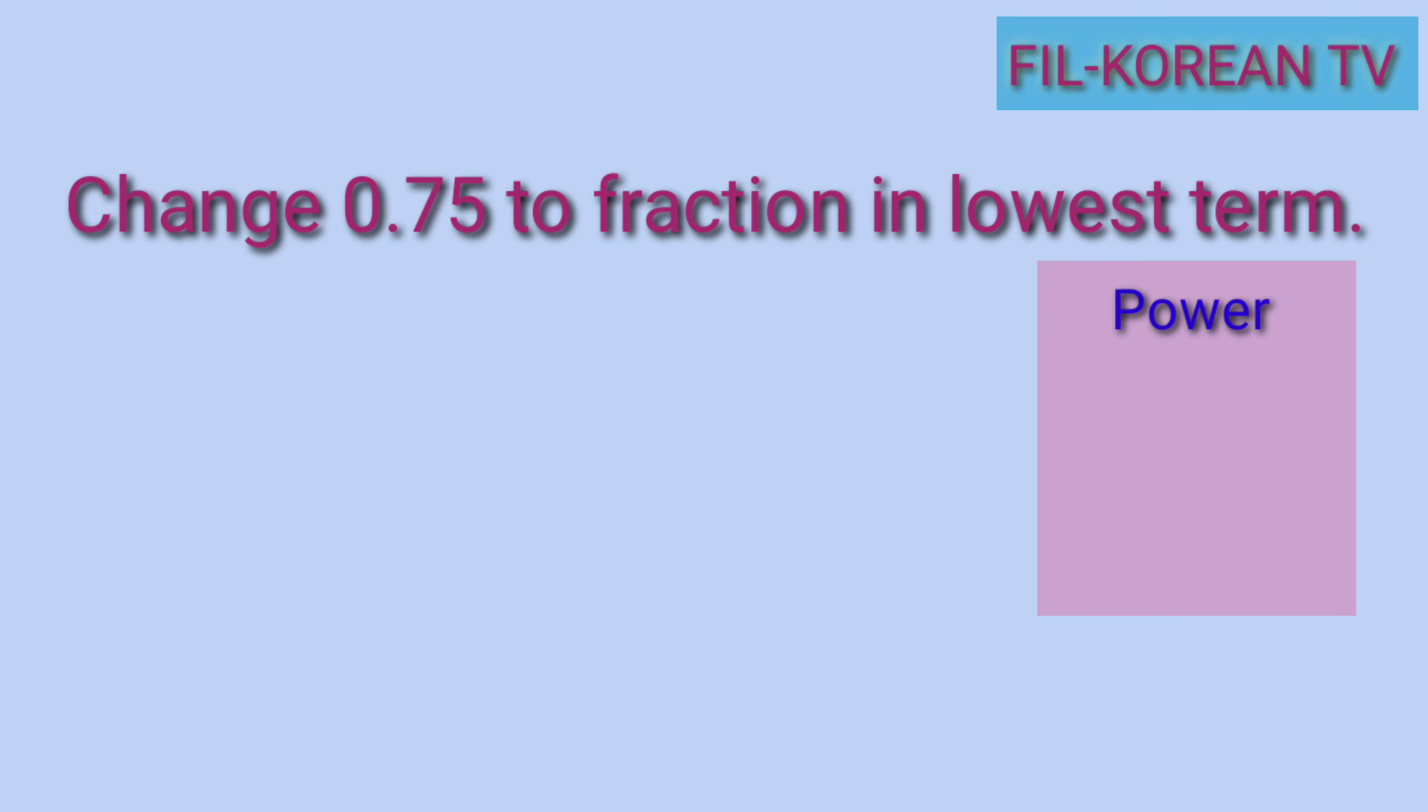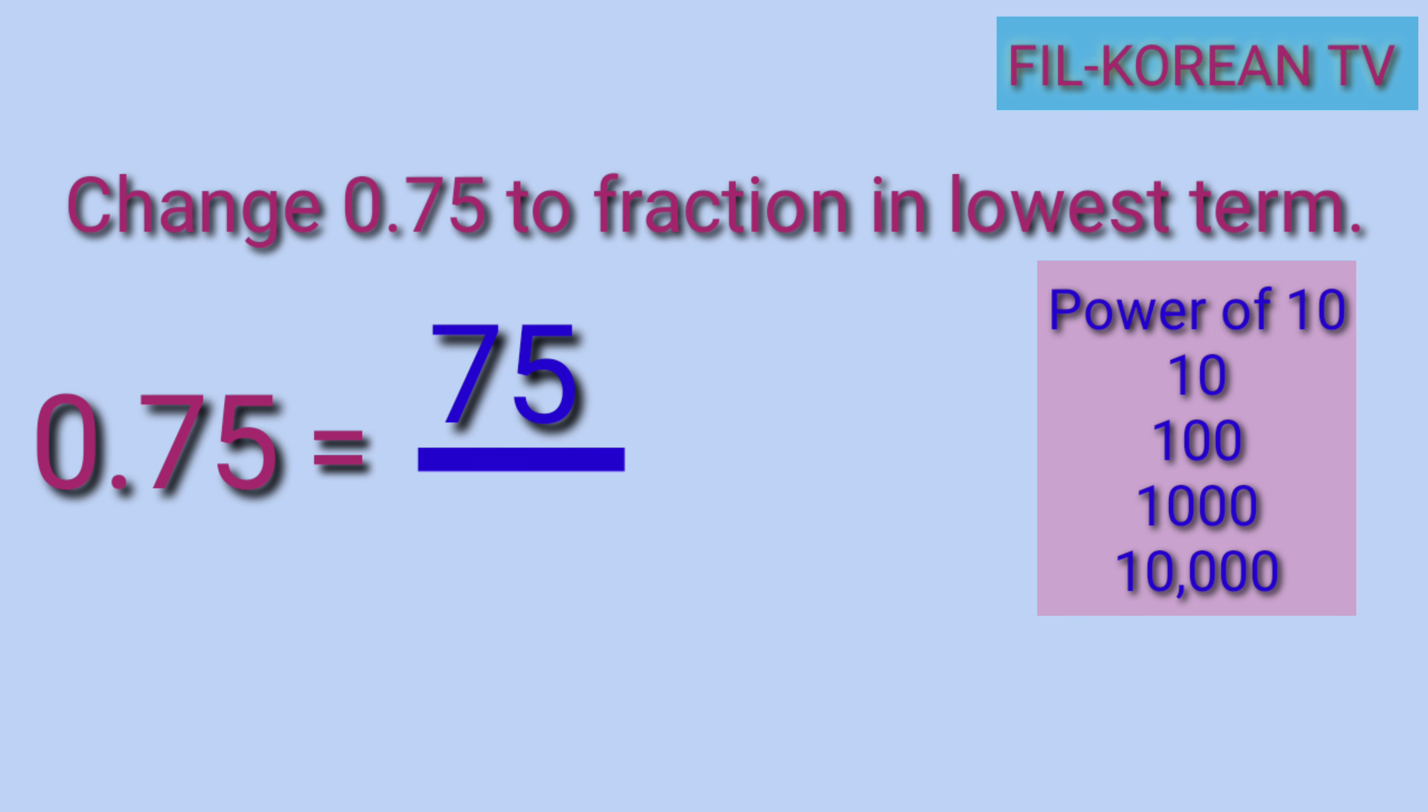When we say power of 10, 10, 100, 1000, 10,000, and so on. Okay, let's answer. Let's write 75 as a numerator. And then, the denominator that we are going to use is 100 because there are two digits after the decimal point. Let's count 1, 2. So, that means that we need to use a power of 10 with two zeros. And that is 100.